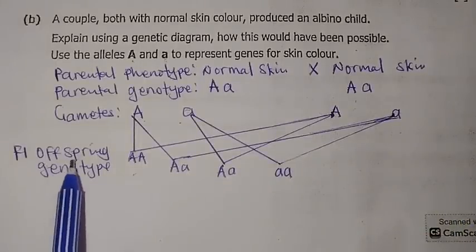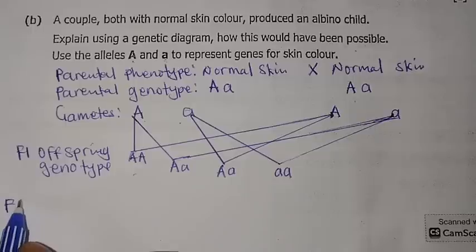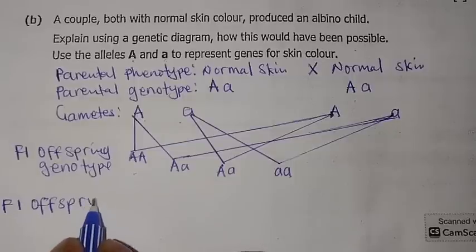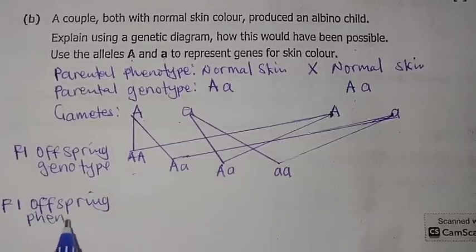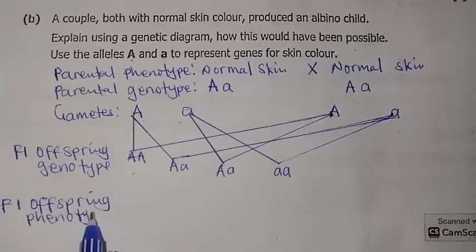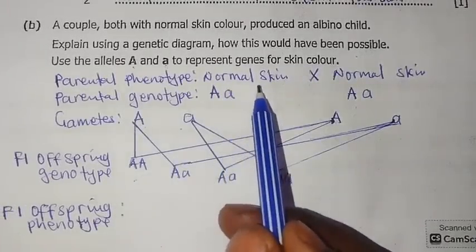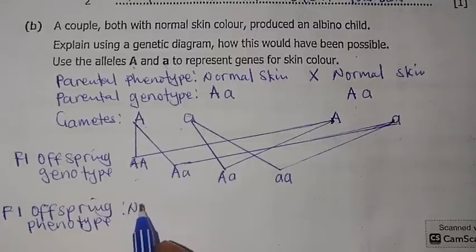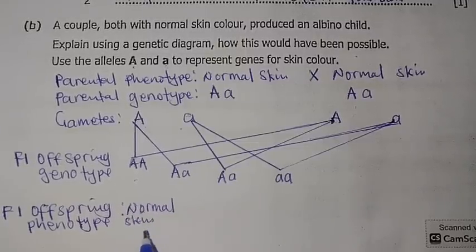After having the F1 offspring genotype, we now need to determine the F1 offspring phenotype. Phenotype is the physical or outward appearance of an organism. Since we are looking at skin color, the first offspring was homozygous dominant and has normal skin color.